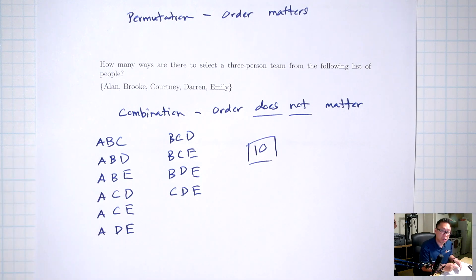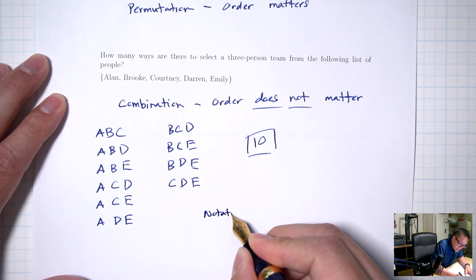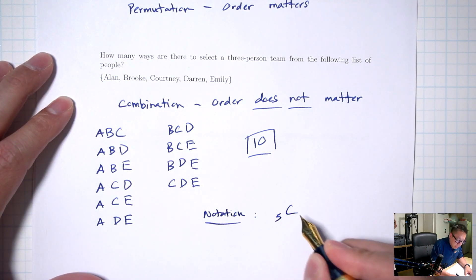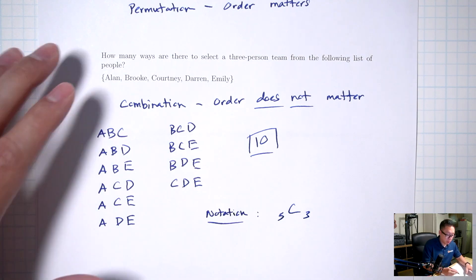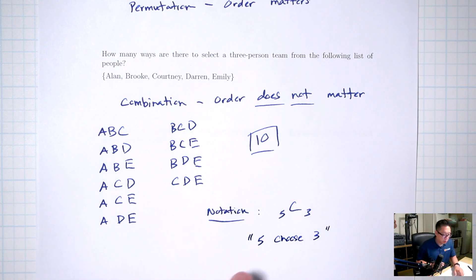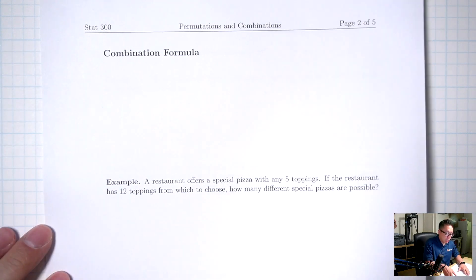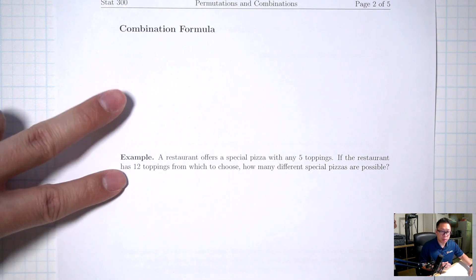In the second scenario, if we're just picking a three-person team with no special jobs, Alan, Brooke, Courtney is the same three people as Courtney, Brooke, Alan. So the first scenario, where we have special jobs, the order matters — this is called a permutation. Everything we talked about in the last lecture — license plates, passwords — the order matters, so they were all permutations. In the second scenario, picking three people with no special jobs, the order does not matter — this is called a combination.